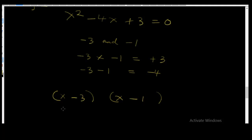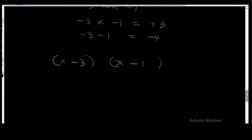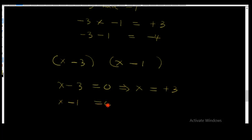If you multiply this out you're going to get the original equation. Now let's equate all to zero. x - 3 = 0, therefore x = +3. Also x - 1 = 0, therefore x = +1.